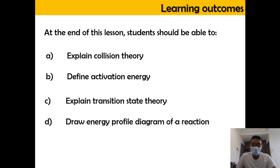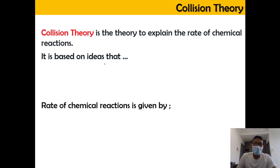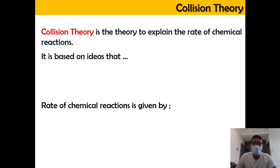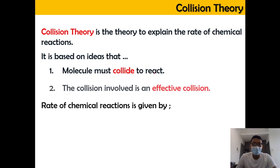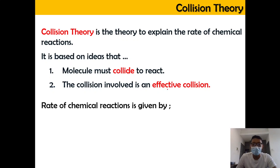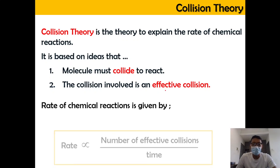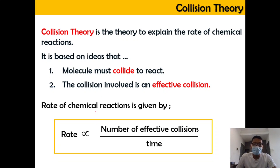Collision theory is basically a theory used to explain the rate of chemical reactions. It is based on the idea that molecules must collide in order to react, and the collision involved must be an effective collision. The rate of reaction depends on the number of effective collisions divided by time.